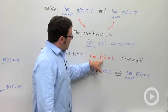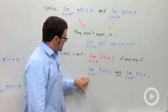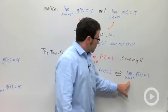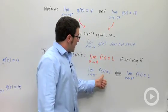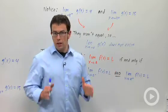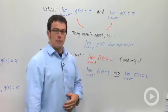Limit as x approaches a of f of x equals L if and only if the two one-sided limits—the limit as x approaches a from the left and the limit as x approaches a from the right of f of x equal L, the same number. Only if those two one-sided limits have the same value will the two-sided limit exist.